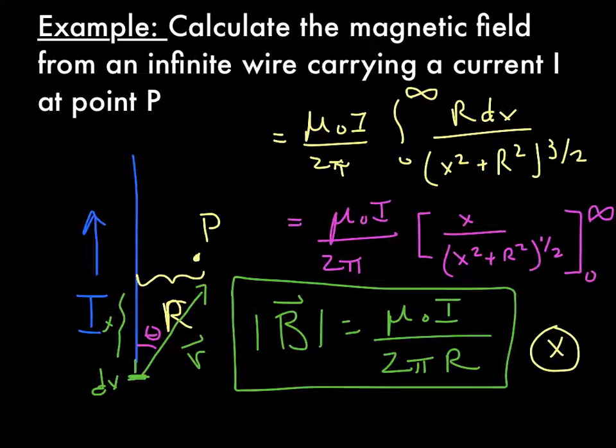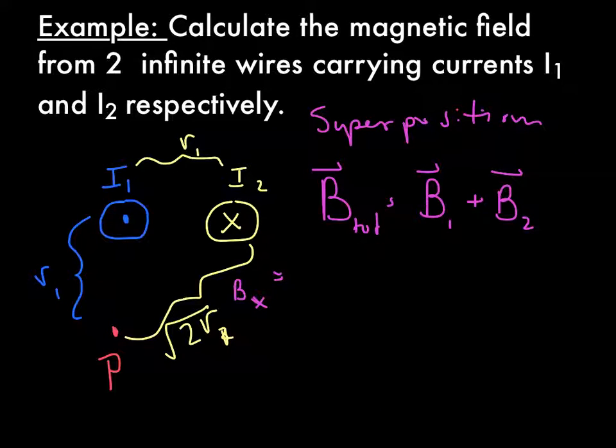So what happens when we have more than one wire? Alright, so let's see. We have two wires, let's go back to our good friend superposition, which just means that to find the total magnetic field, we're going to add magnetic field from wire 1, magnetic field from wire 2. Wait a minute, these are vectors. We have to worry about direction. And components.